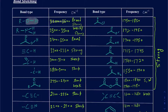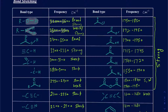For amines and amides, you'll see N–H stretches between 3,300–3,500 cm⁻¹ that are not particularly broad. Just because you see a peak there doesn't necessarily mean it's an amine — it could be an amide as well. You can identify it by looking at other peaks in the spectrum.